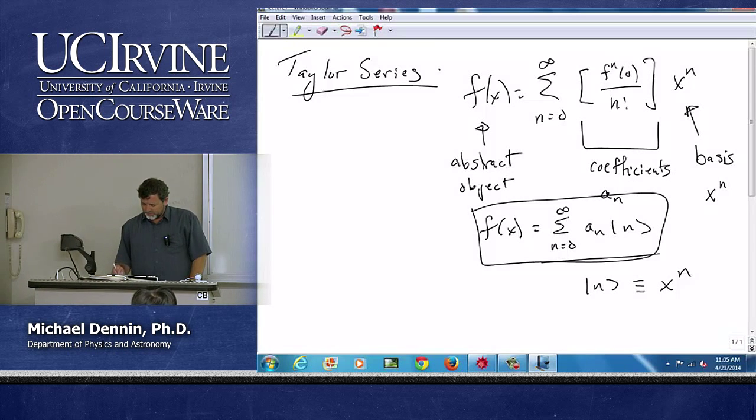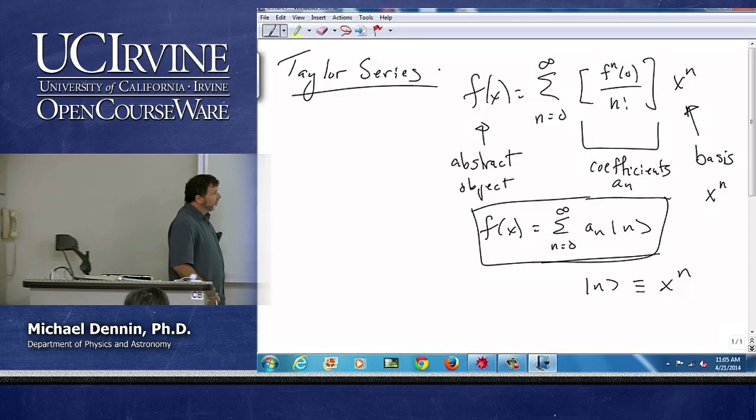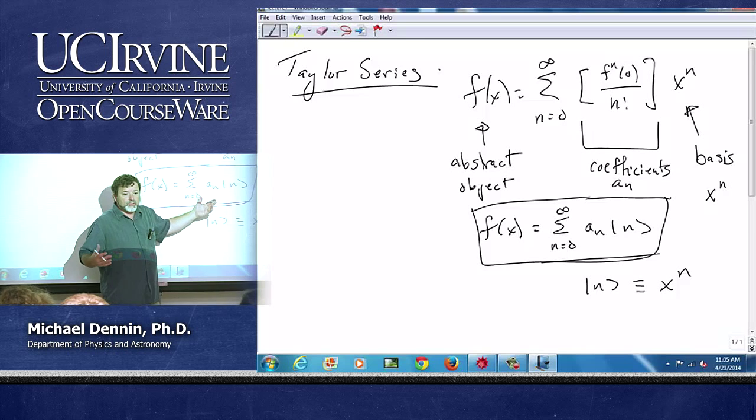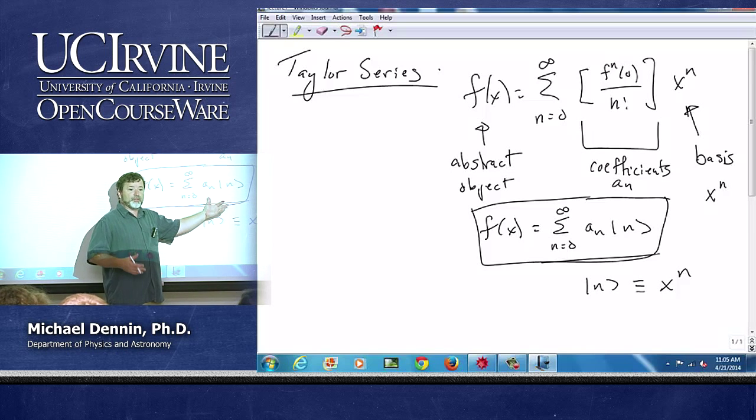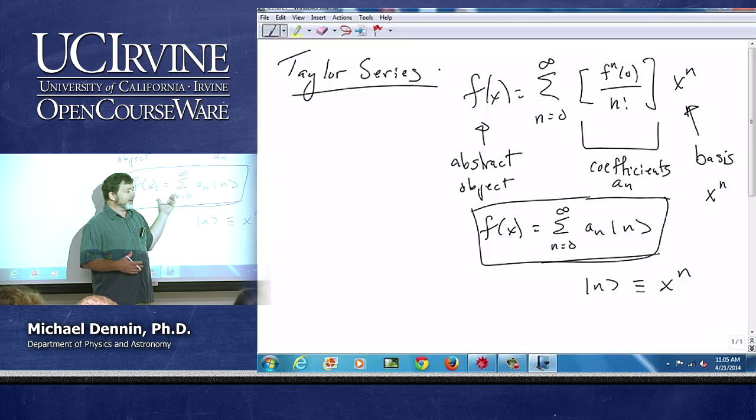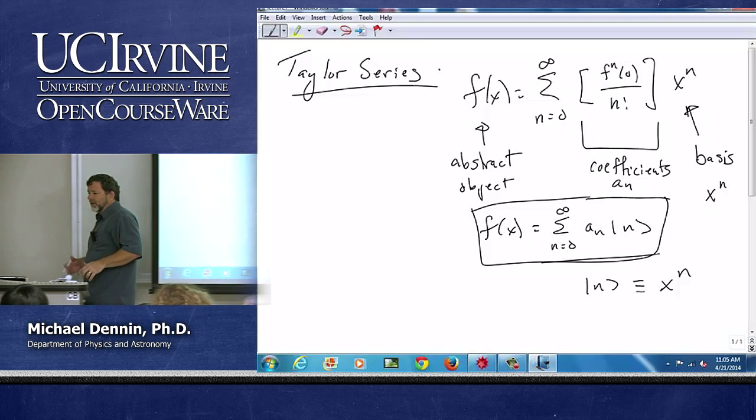I might find for a particular function, for instance, you might discover that only three of these a sub n are big, maybe only three of them are non-zero, and this is a really nice representation for f(x) because it's a simpler one. I only have to keep track of these coefficients. That's one of the things we gain by doing this.